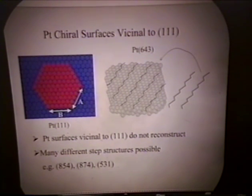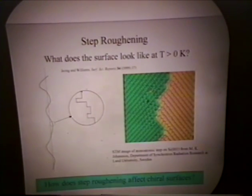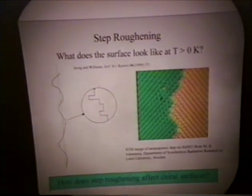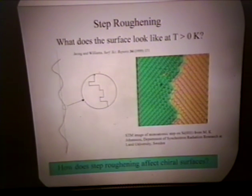All the figures shown up to this point show periodic kink structures, but it's established that these step structures actually change because of thermal roughening, because atoms on the step structure diffuse due to thermal energy. A lot of people have done work on step roughening, and it's been well-established that steps start to become wavy at finite temperatures. The dashed line is a straight step at temperature equals zero Kelvin, and at any finite temperature the step starts to become wavy. The figure on the right is an STM image of a monatomic step on silicon 001, showing that this actually happens in real life. The main objective of this presentation is to answer the question: how does step roughening affect chiral surfaces and what happens to these kink structures?